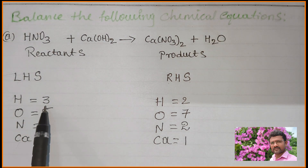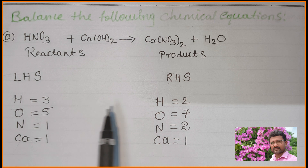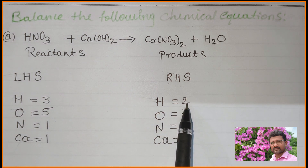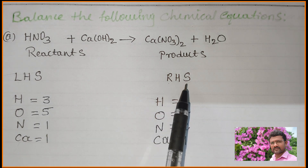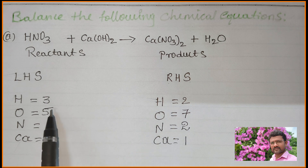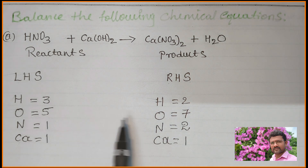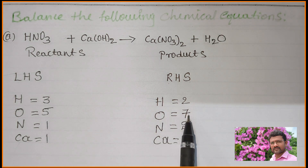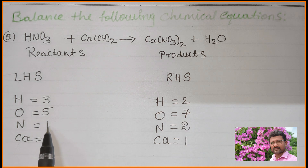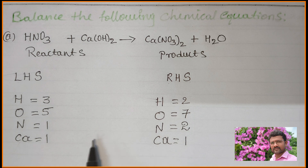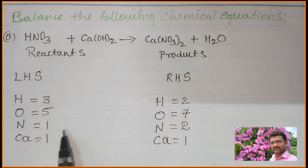Now take a comparison. Left side: 3 hydrogen; right side: 2 hydrogen — not balanced. LHS oxygen: 5; RHS oxygen: 7 — not balanced. LHS nitrogen: 1; RHS nitrogen: 2 — not balanced. LHS calcium: 1; RHS calcium: 1 — calcium is balanced. All other elements are not balanced.